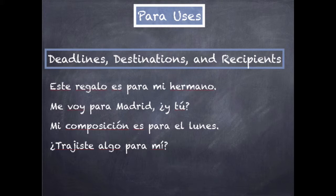'Me voy para Madrid. ¿Y tú?' — I'm going to Madrid. That's my destination, that's the end of the road for me. 'Voy para Madrid. ¿Y tú?' — I'm going to Madrid, and you? 'Mi composición es para el lunes' — the deadline. It's for Monday; Monday is going to be the end.